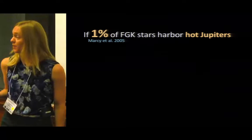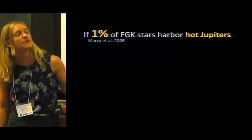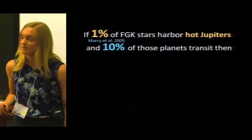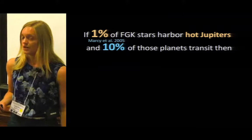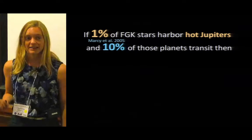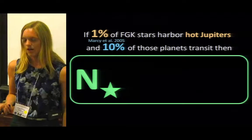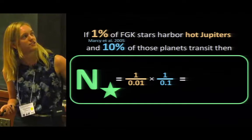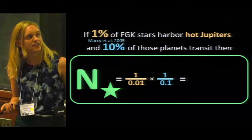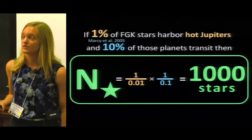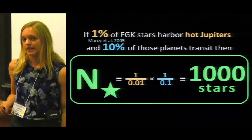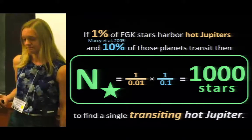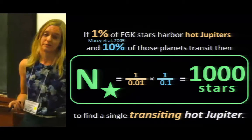So now we go back to our initial question. We said that we have 1% of FGK stars hosting hot Jupiters. We just saw that roughly 10% of those should transit. So what that means is that if we want to find a single transiting hot Jupiter, we probably want to look at N star, where N star is just, combining those two numbers together, 1,000 possible stars in our sample. Now where are these 1,000 stars? How do we find them? How do we observe them? And that's just to find one transiting hot Jupiter.